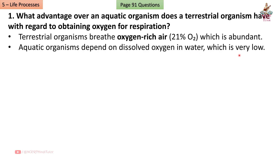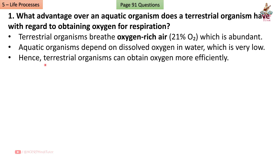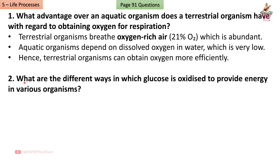Page 91, Question 1: What advantage over an aquatic organism does a terrestrial organism have with regard to obtaining oxygen for respiration? Answer: Terrestrial organisms breathe oxygen-rich air (21% oxygen), which is abundant. Aquatic organisms depend on dissolved oxygen in water, which is very low. Hence terrestrial organisms can obtain oxygen more efficiently.